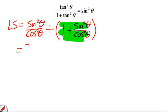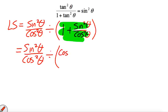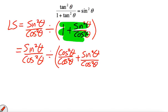So we're going to leave this. We're going to have sine squared over cos squared. Well, we're going to still have divided by, now it's going to be cos squared over cos squared plus sine squared over cos squared.